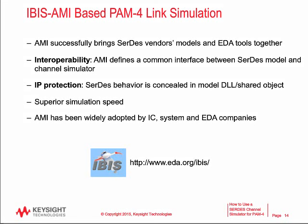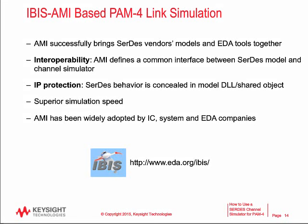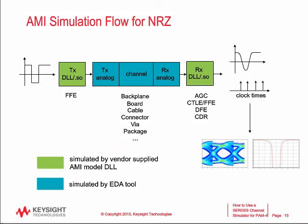How does an IBIS AMI flow work for traditional NRZ? You have your bit pattern defined. It's fed into the transmitter model from the vendor — the DLL. The output is a waveform that the simulation tool, the EDA company's channel simulator, characterizes the channel and convolves the impulse of the channel with the output from the transmitter. This waveform is then fed into the RX model for clock data recovery and equalization techniques to open up the eye. This is the traditional flow.